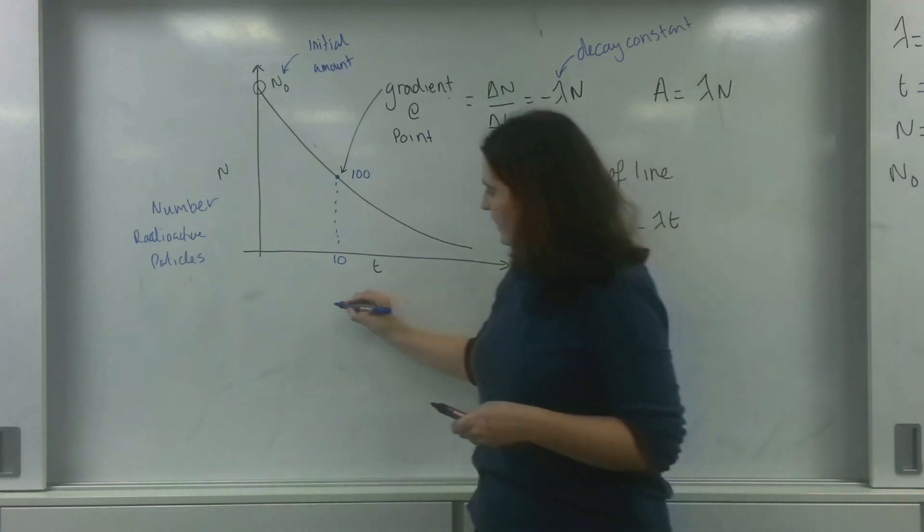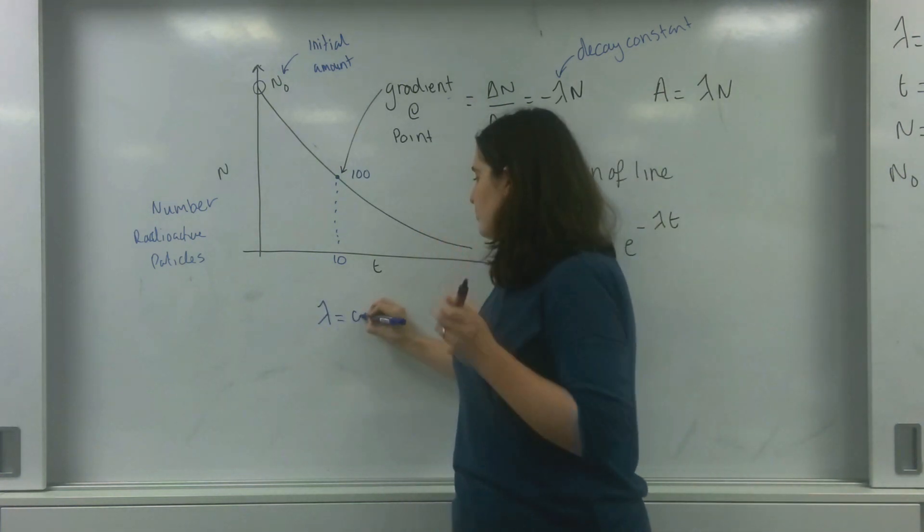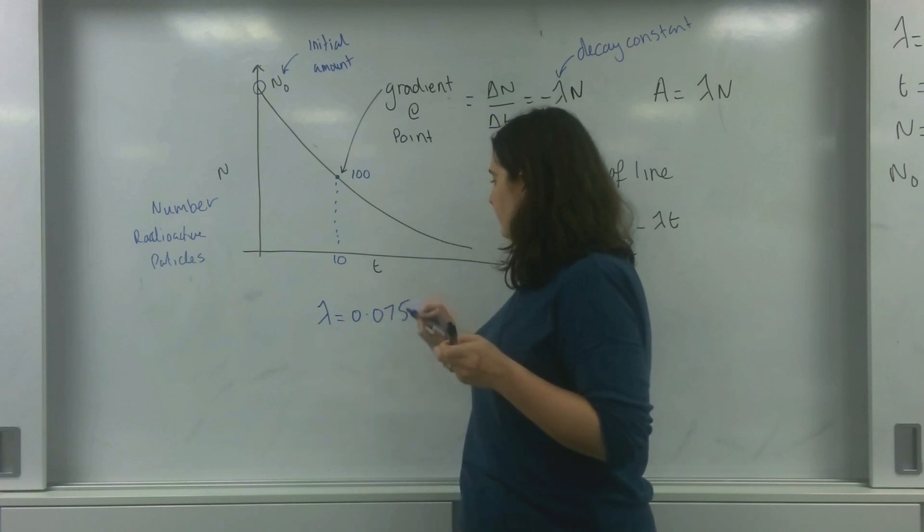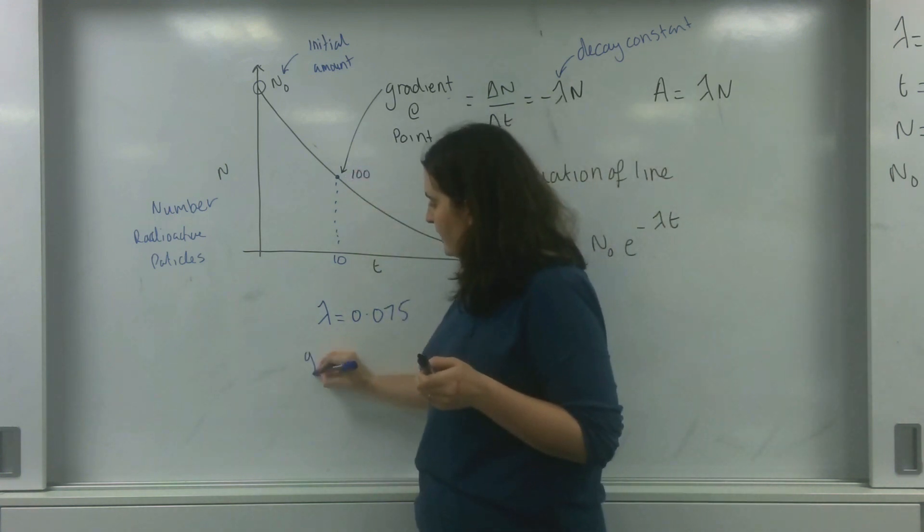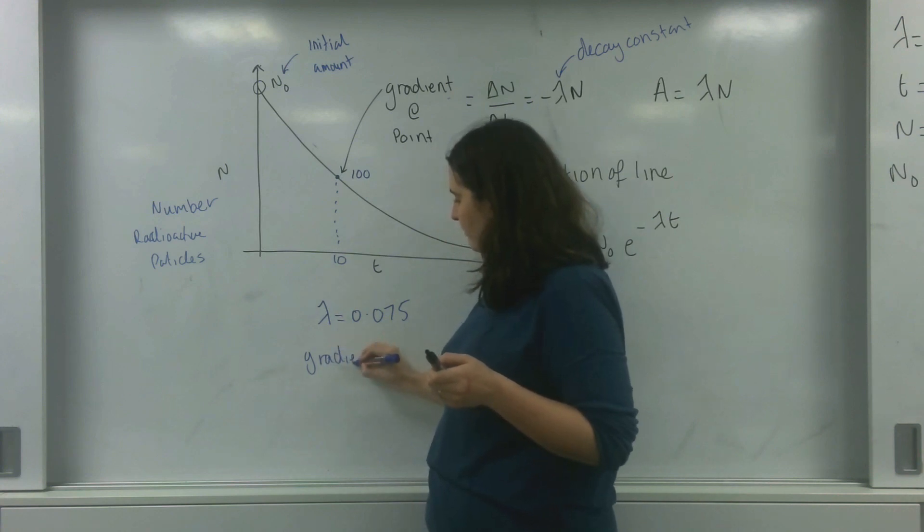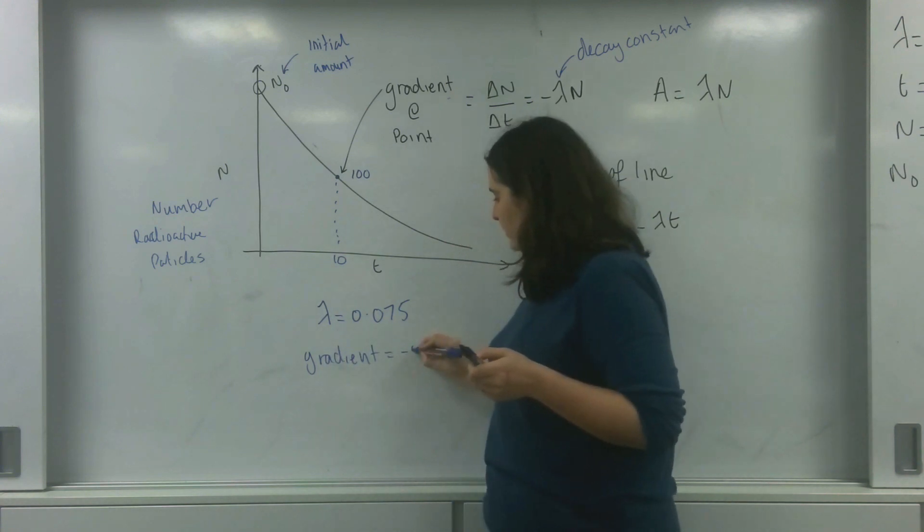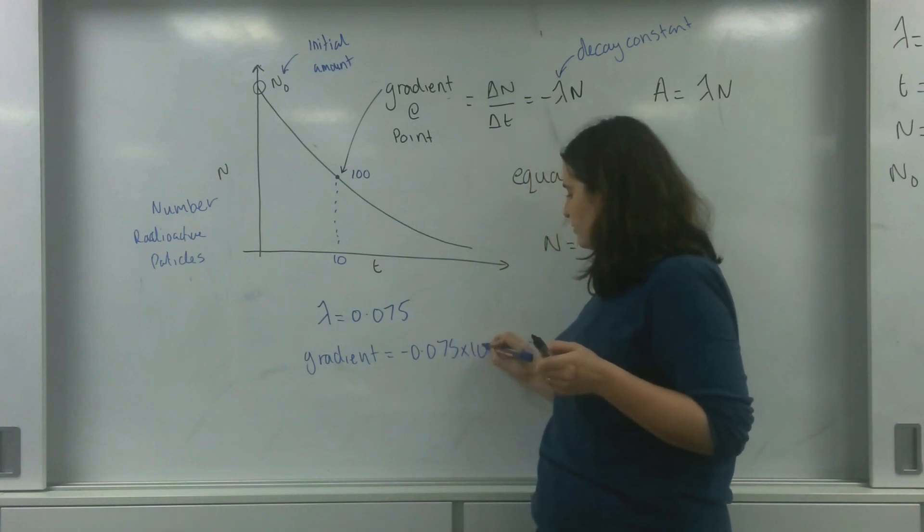If my decay constant was 0.075, this means at this point my gradient equals minus 0.075 times by 100.